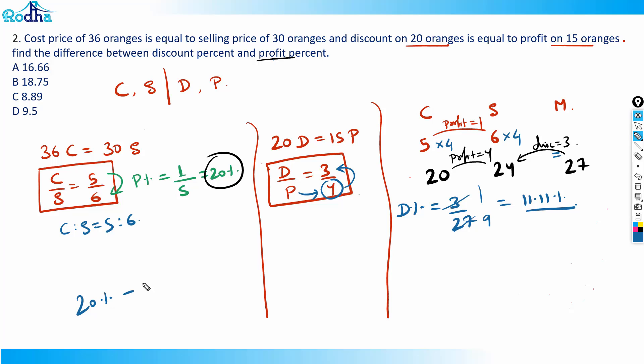The difference between discount percent and profit percentage is 20% minus 11.11%, which equals 8.89%. That's the answer — option C. This is a good application of ratios; you should learn this kind of question.